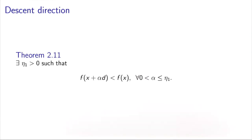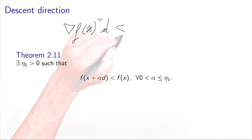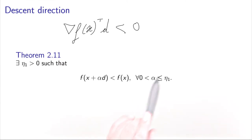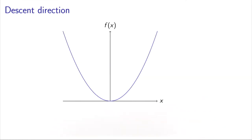We define a descent direction as a direction such that the directional derivative of f at x along d is strictly negative. There is a theorem that says that if you follow d with a step alpha which is not bigger than eta1, where eta1 is a strictly positive number, then you will achieve a reduction of the value of the function.